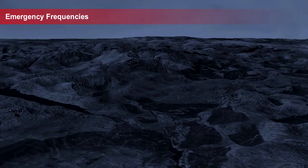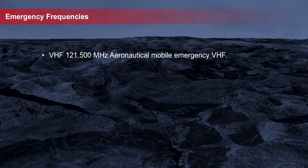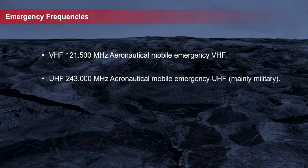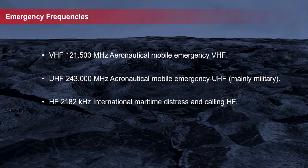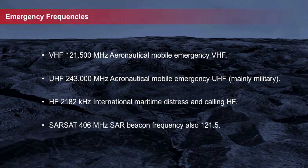The following are dedicated radio frequencies used to communicate distress, urgency, and safety messages. You are required to know these: VHF 121.5 MHz Aeronautical Mobile Emergency, VHF/UHF 243 MHz Aeronautical Mobile Emergency UHF (mainly military), HF 2182 kHz International Maritime Distress, and HF 1.210 MHz Aeronautical Mobile.